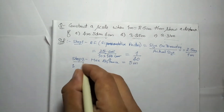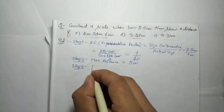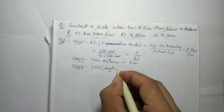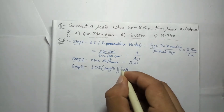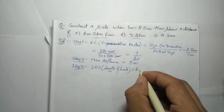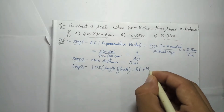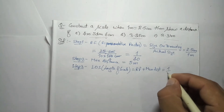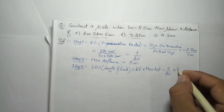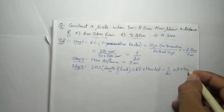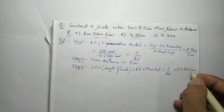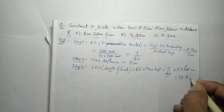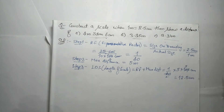Step 3: find the length of scale (LOS). Length of scale equals RF multiplied by maximum distance. That is 1/40 into 5 meters, converted to centimeters, giving 12.5 centimeters.